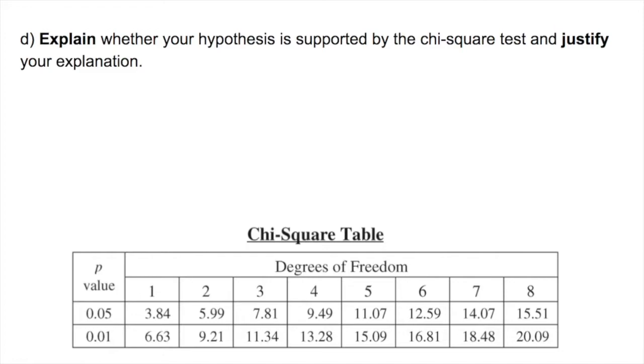Part D says explain whether your hypothesis is supported by the chi-square test and justify your explanation. So we're going to start by determining how many degrees of freedom we have. Because there are three different outcomes we're going to have two degrees of freedom.